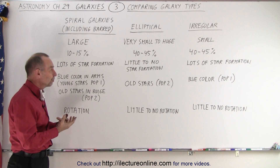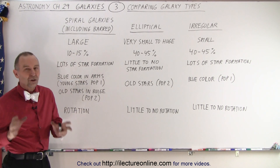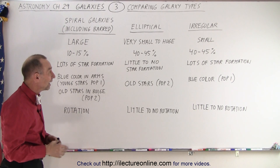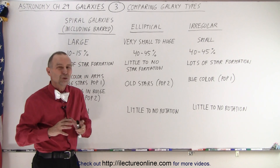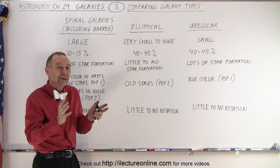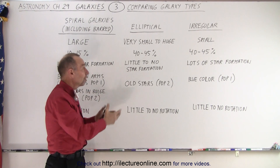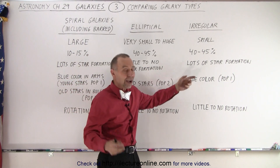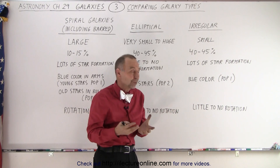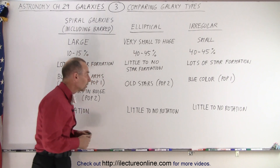What about star formation? In spiral galaxies there's still a lot of star formation — our Milky Way is still very busy producing new stars all the time. Elliptical galaxies tend to produce very few to almost no new stars; there's very little star material and very few nebulas from which you can make a star. In irregular galaxies, the entire galaxy is full of material and busy making stars, so there's lots of star formation.